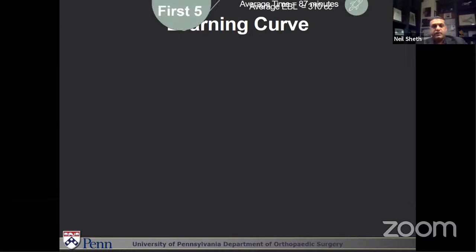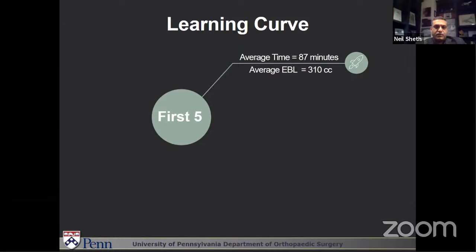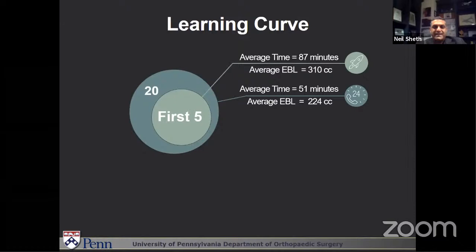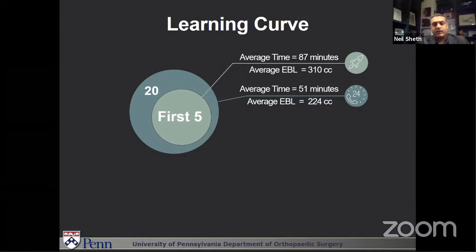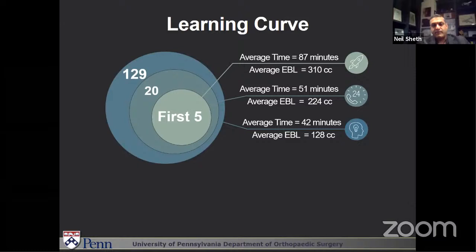We looked at some data on our learning curve. For the first five cases, the average length of time from start of incision to start of closure was 87 minutes and blood loss was a little more than 300 cc. After those five cases, we went back to the cadaver lab and learned more tips and tricks. For the next 20 cases, we dropped our average time by almost 35 minutes, down to 51 minutes, with average EBL of 224 cc. At that point we went back to see Tyler and incorporated additional things into our technique. The next 130 cases brought average time down to about 42 minutes with average blood loss of about 128 cc.